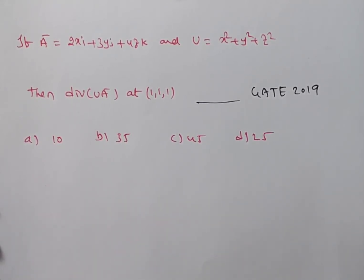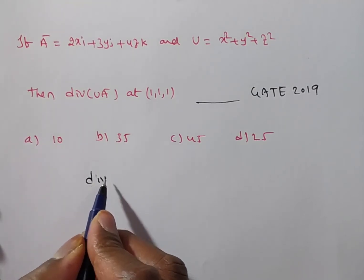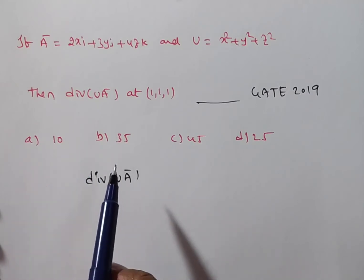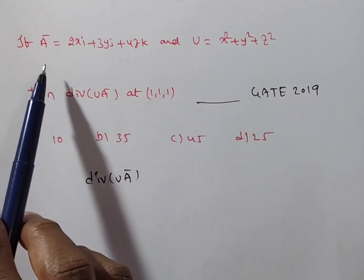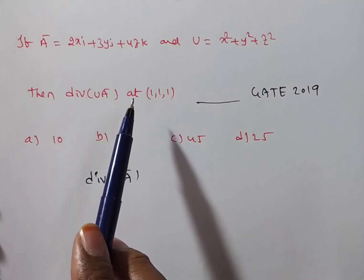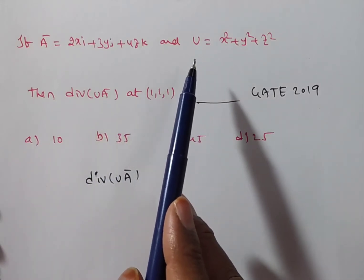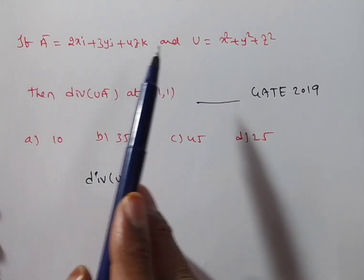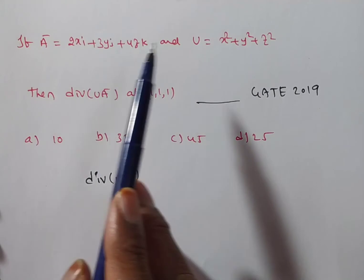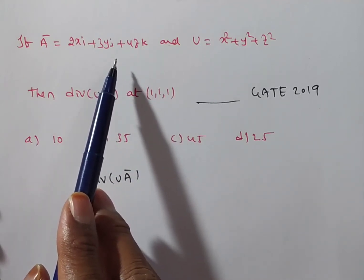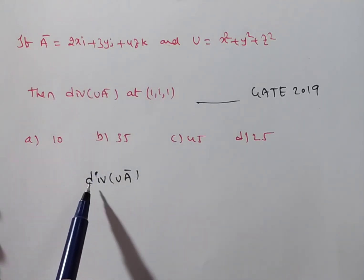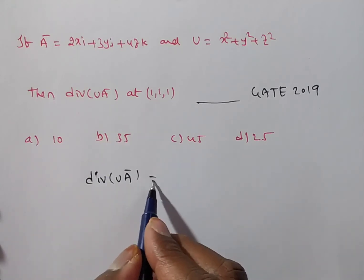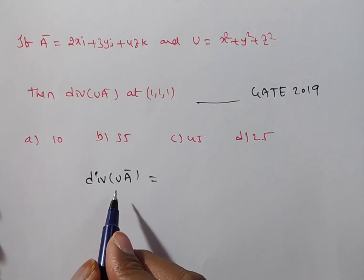You see friends, what you have to find? We need to find out the divergence of u a bar. Here, are they given u? Yes. Are they given a bar? Yes. So, you can do this problem. In a first method, you see, u into a bar you can do. Then you will get a vector. This is a scalar and this is a vector. Vector into scalar gives a vector only. So, for the vector, you can find out the divergence. Otherwise, you have another method. We have a formula. Properties of the divergence we have.